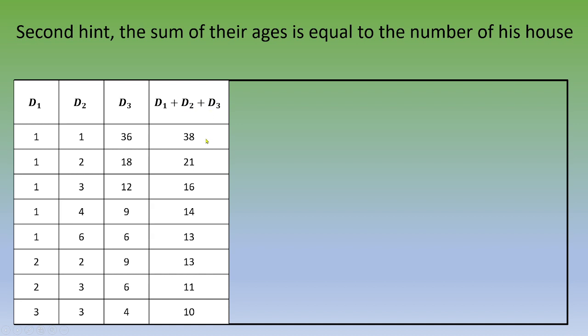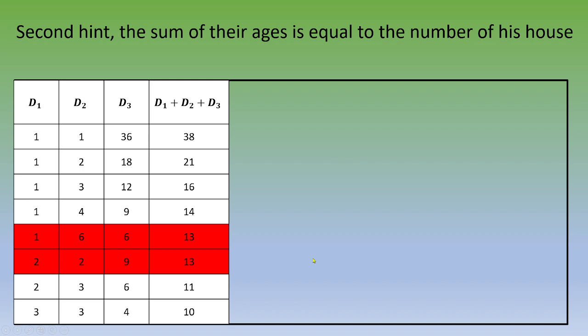We've got different numbers, except for these two combinations. Think about that. If you've got a third hint, that means you cannot give the answer directly with two hints. That means this is one of these two combinations.